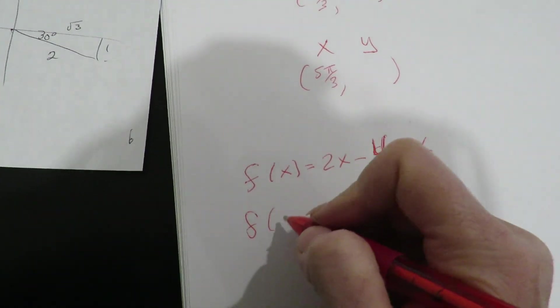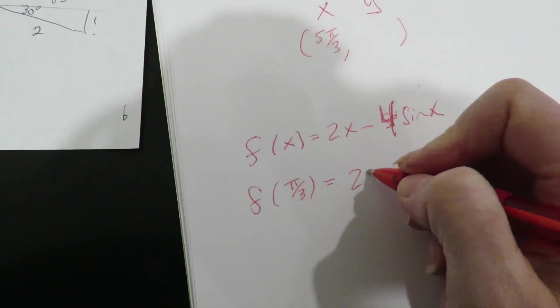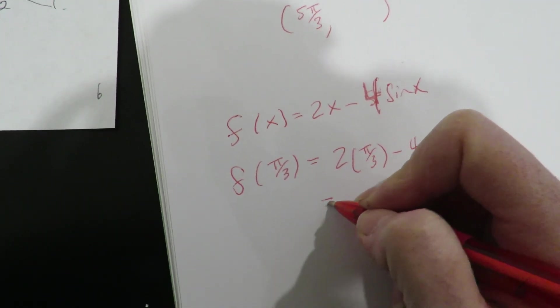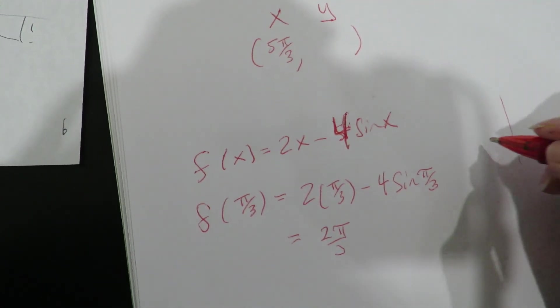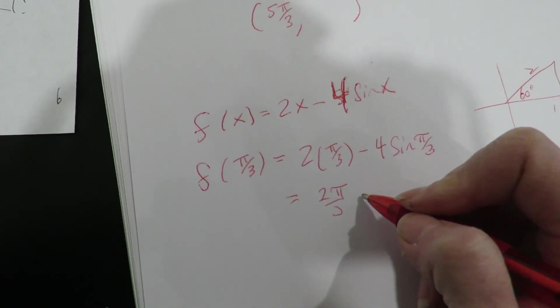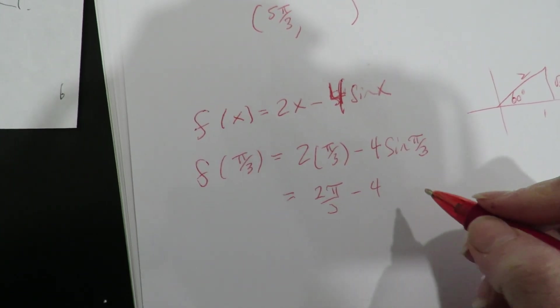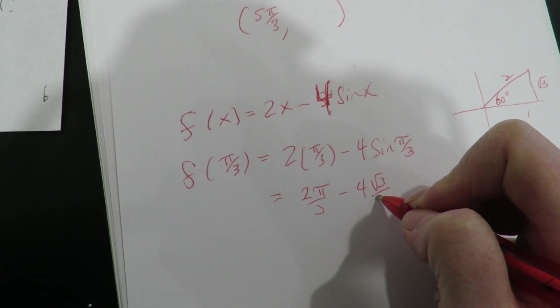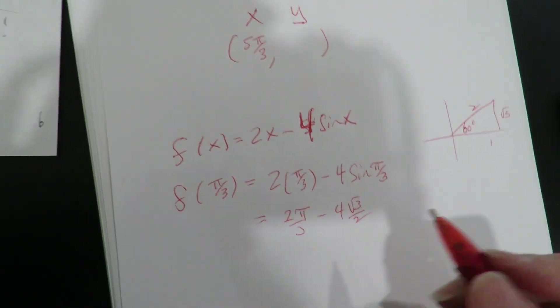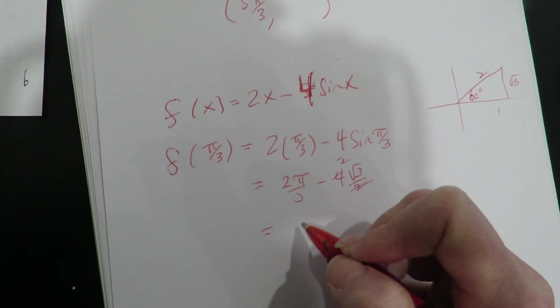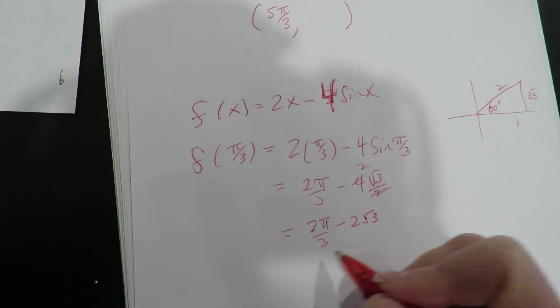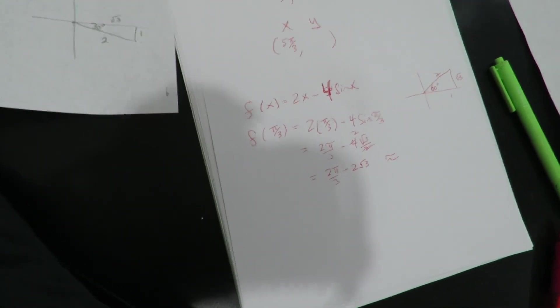Alright, so here I go. So f of π over 3, that's 2 times π over 3 minus 4 sine π over 3. Alright, so 2π over 3, π over 3 is 60 degrees, that's the bigger leg. Okay, so minus 4. So sine's going to be radical 3 over 2. That's positive because it's in quadrant 1, but I got the negative in the formula. Alright, so this is going to be 2π over 3 minus 2 radical 3.